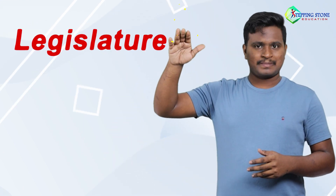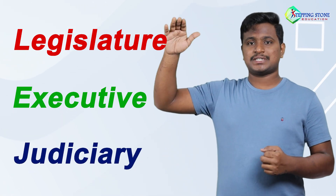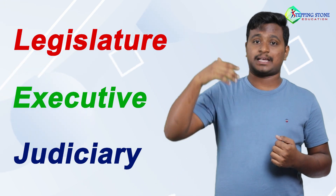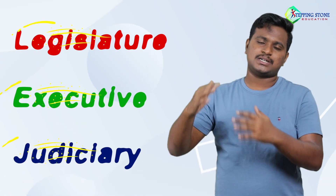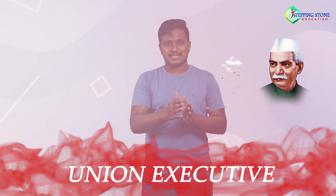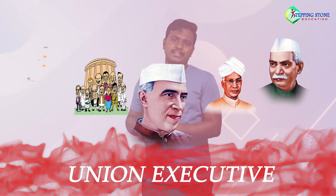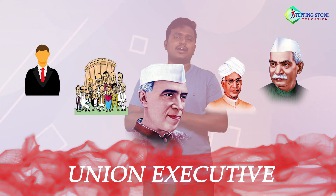What is meant by Union Executive? We all know that there are three branches of government: Legislature, Executive, and Judiciary. The Legislature makes the laws. The Executive implements the laws made by the Legislature. The Judiciary interprets the laws and resolves disputes between the Legislature and the Executive. The Union Executive means the executive body at the Union level, i.e., the Central Government level. The Constitution says the Union Executive consists of the President, the Vice President, the Prime Minister, the Council of Ministers, and the Attorney General of India. In this chapter, we are going to discuss about the Indian President.